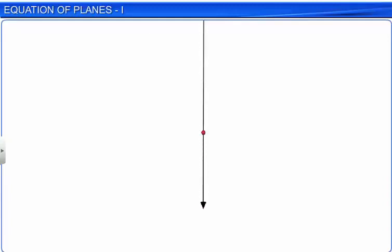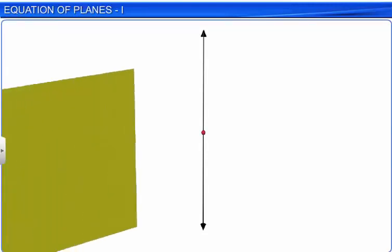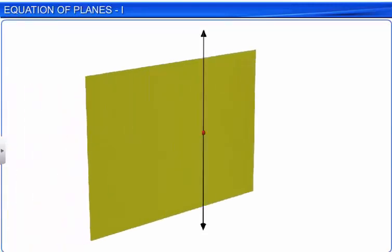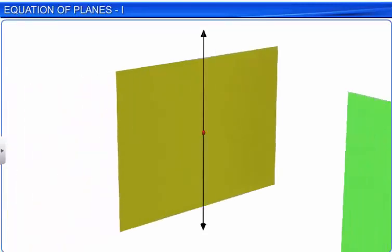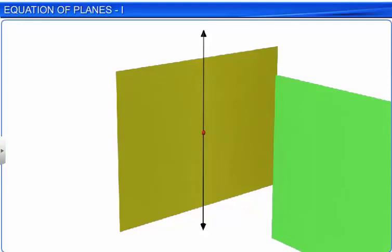In space, it is possible to have an infinite number of planes passing through a given point or a line. We can determine a unique plane in space under certain conditions. These conditions give us different forms of the equation of a plane. Let us see what these conditions are.